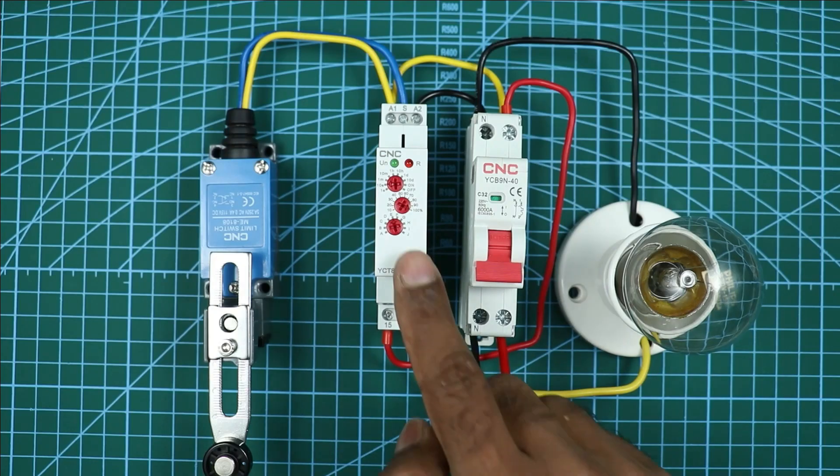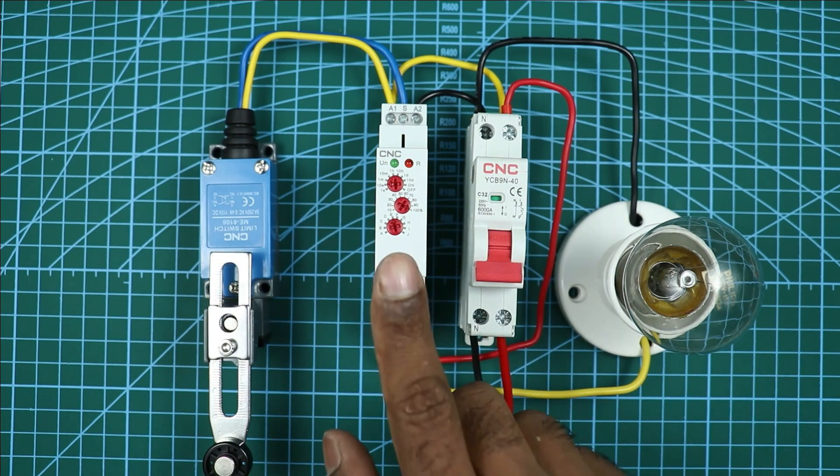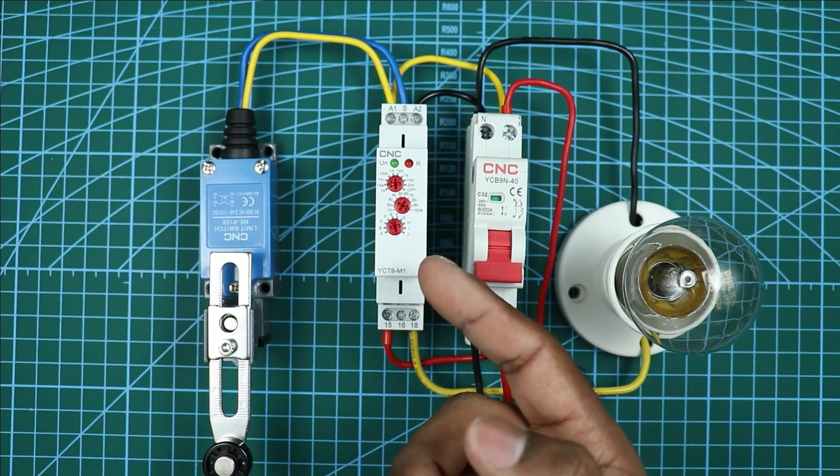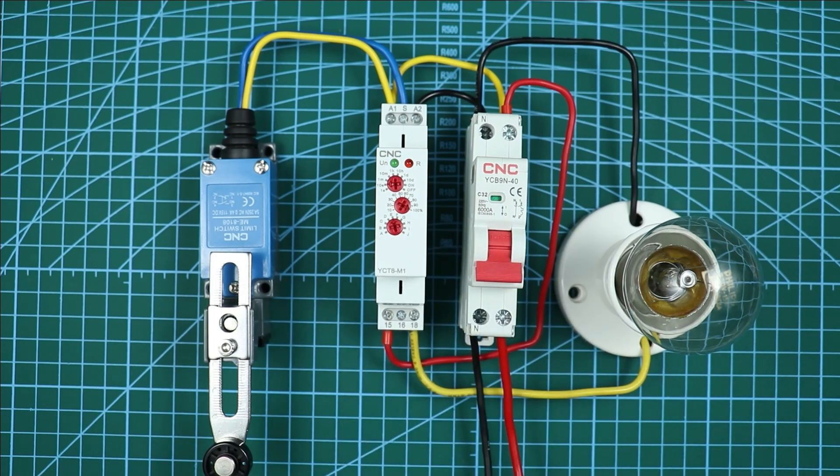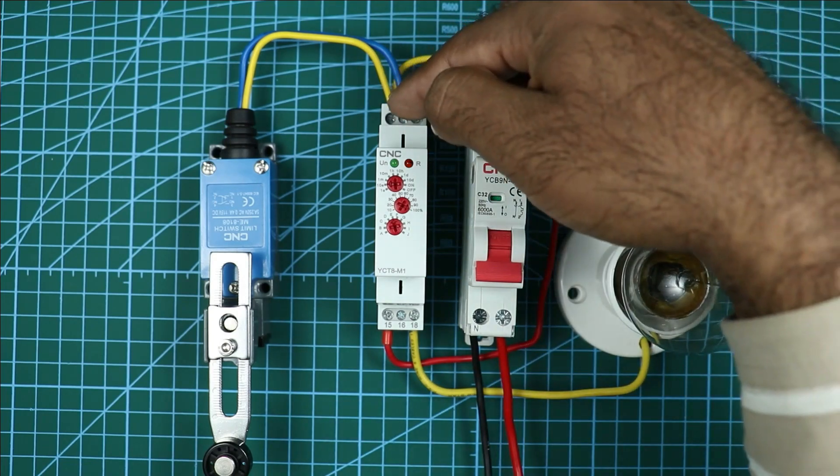For operating timer through this limit switch, the connections are now completed. Let's have a quick review to the connections we have done. If you want to operate this timer, then you have to provide phase supply and neutral supply to this timer. So what I did, through this MCB I provided phase supply and neutral supply.